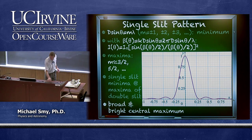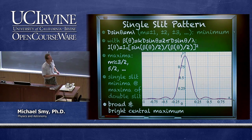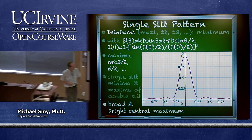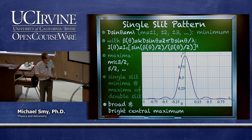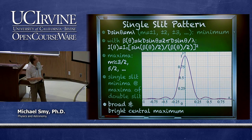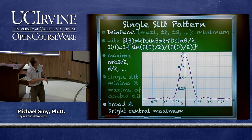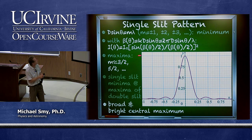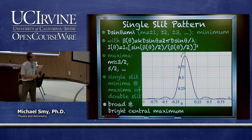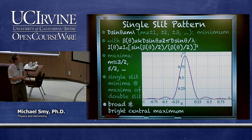If we produce the intensity pattern as a function of x — or this beta function, defined as the wave number times the diameter times the sine of the angle — the actual intensity function looks like this, in case you are curious.